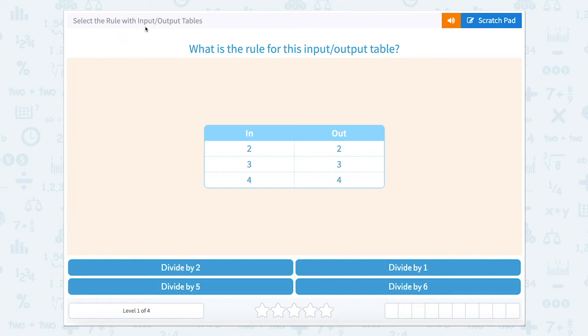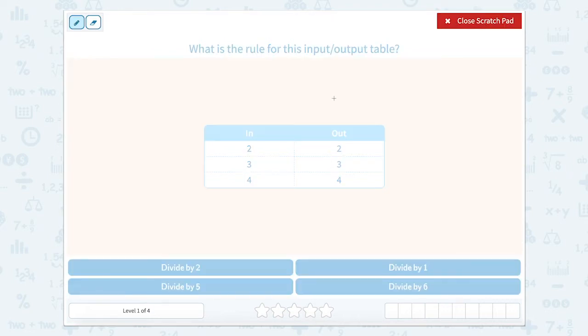Select the rule with input-output tables. What is the rule for this input-output table? I love doing input-output tables because it's kind of like a mystery and we have to solve and figure out what the rule is.